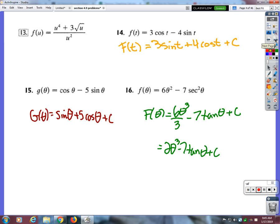Okay, so same thing as the other one, we have to rewrite this by multiplying it by u to the negative 2. Right. So that makes this u... u to the second plus 3u to the negative 3 halves. Okay, so that's just rewriting it, we have not taken the anti-derivative yet.